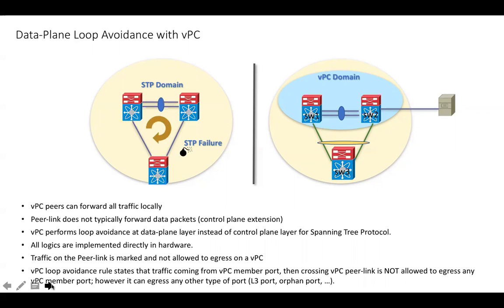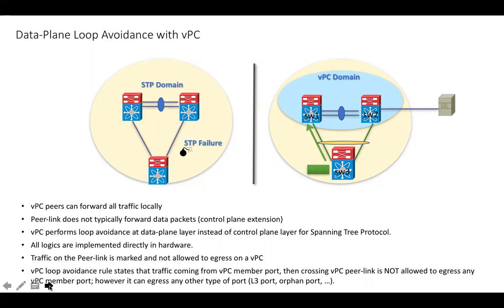In a VPC environment, loop avoidance is performed in the data plane, and the logic for that is implemented directly in hardware — not in the control plane. This loop avoidance rule is also known as the VPC check. The VPC check says: VPC will not allow traffic that was received over a peer link to be sent out of any VPC member port.